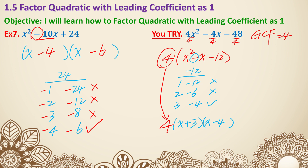Something to think about: how do you decide which parenthesis gets the negative? We talked about that in the examples. That is everything for lesson 1.5. Thank you.